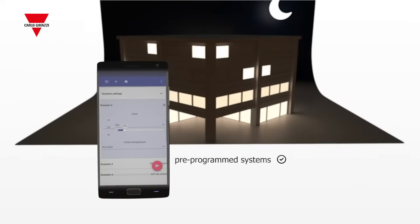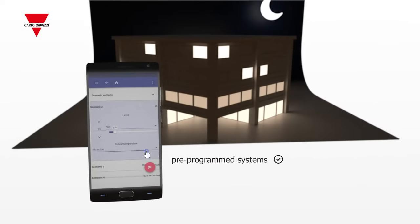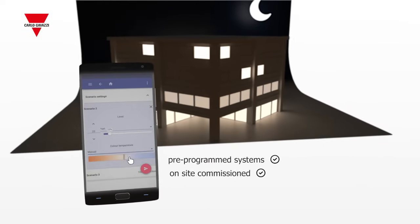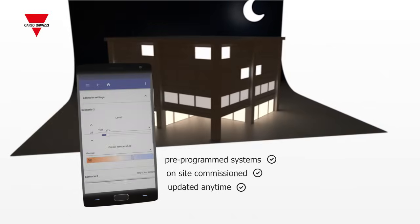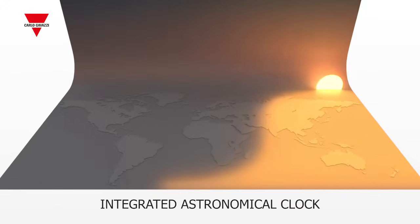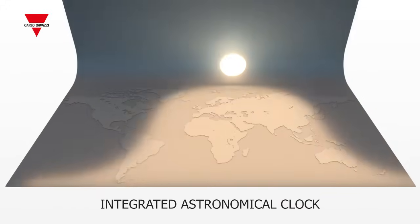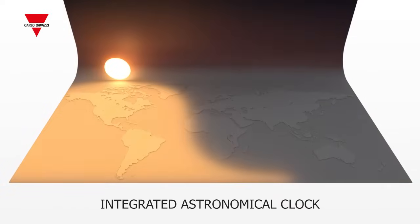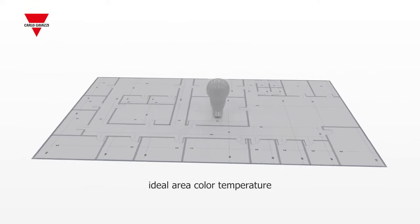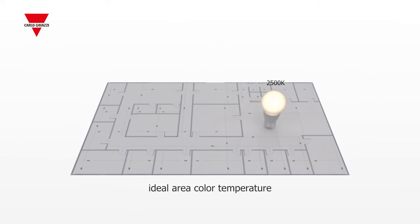Systems can be pre-programmed to meet the demands of the user or commissioned on site and updated at any time. Thanks to the integrated astronomical clock, dawn and dusk are automatically calculated according to the location, and color temperature can be chosen to suit the need of the area.